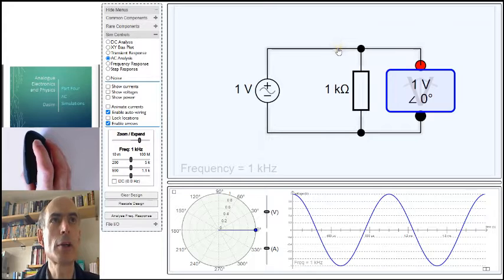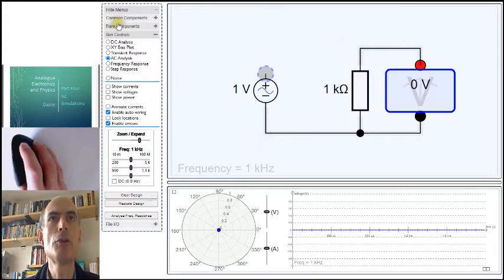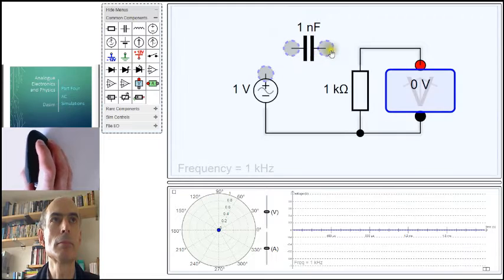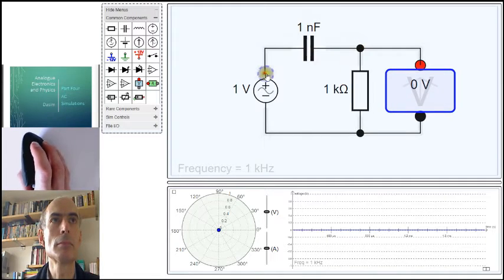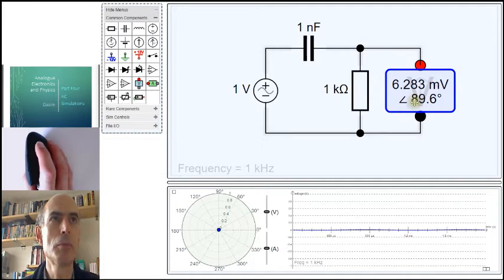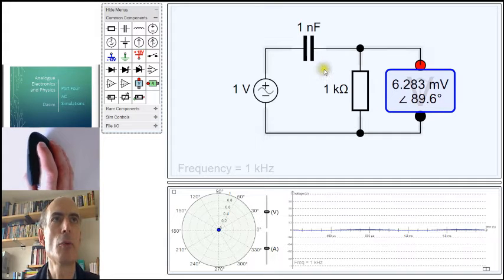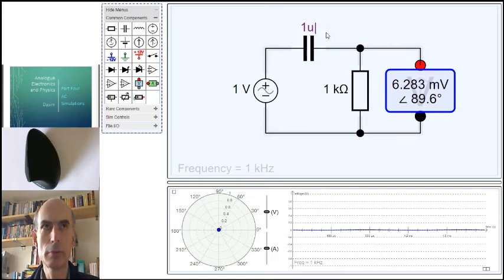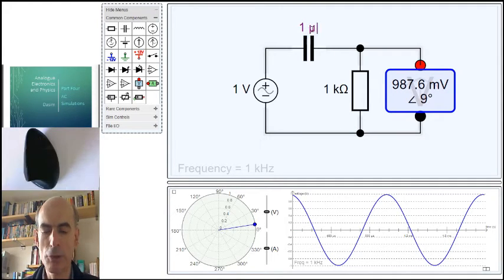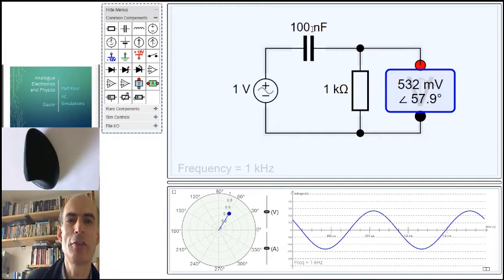Now, if I make this circuit a little bit more interesting by putting a capacitor into it there, the phase angle is no longer zero. It's now 89.6 degrees. Let's make this a bigger capacitor. Maybe that's overdone it a bit. 100 nano. 57 degrees.